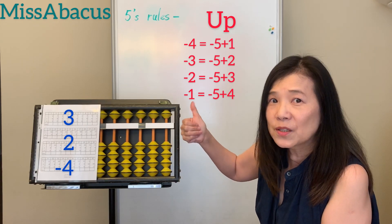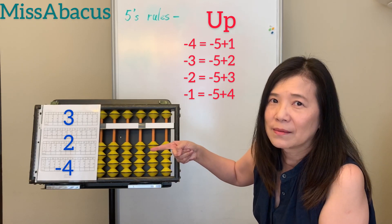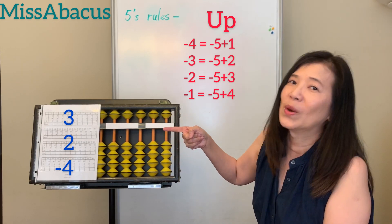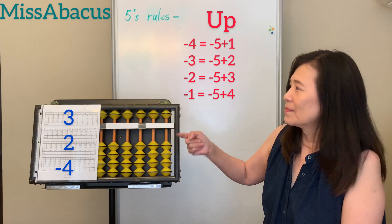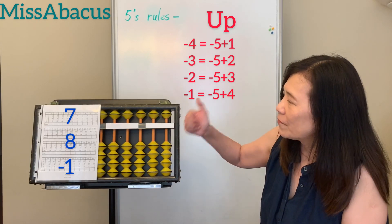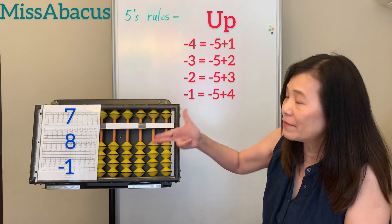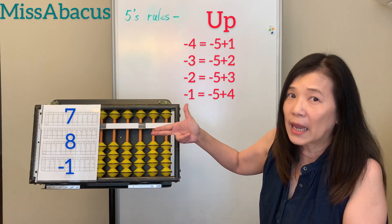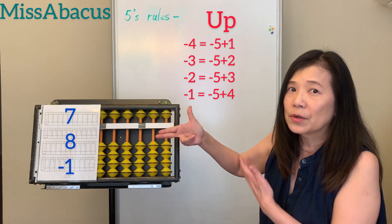Next number: 3 plus 2. Five minus 3 — that's 2. Minus 3: that's 2. Minus 4: minus 5, plus 1. Answer: 1.